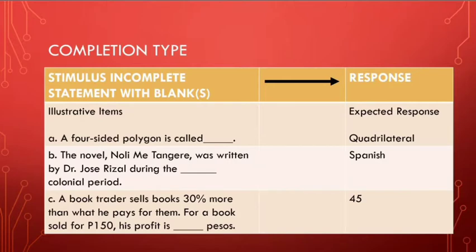Under the stimulus you would see the illustrative item: 'A four-sided polygon is called blank.' That is the stimulus and what's missing is represented by a blank. Be careful when using the completion type of test — the blank should be avoided at the beginning, because we need to first give them the idea of what we are looking for. The possible response is 'quadrilateral.'